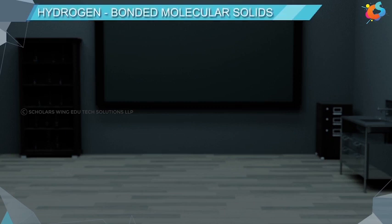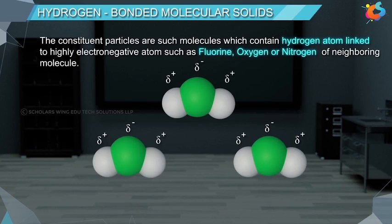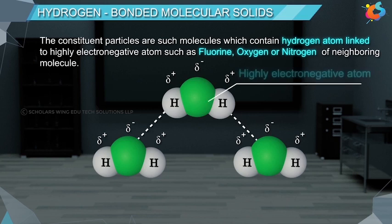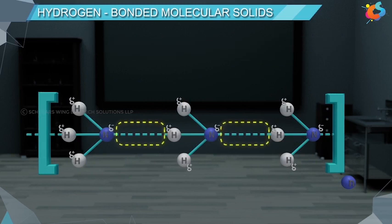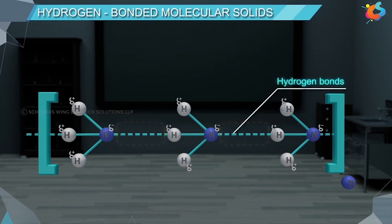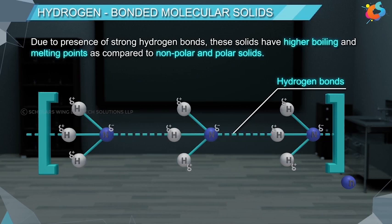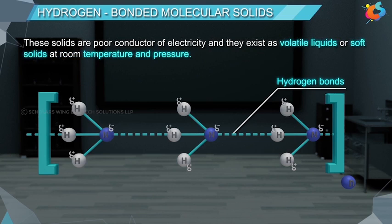In hydrogen bonded molecular solids, the constituent particles are molecules containing a hydrogen atom linked to a highly electronegative atom. The link between the hydrogen atom and the highly electronegative atom of a neighboring molecule is known as a hydrogen bond, represented by dotted lines. Due to strong hydrogen bonds, these solids have higher melting and boiling points compared to nonpolar and polar solids. They are poor conductors of electricity and exist as volatile liquids or soft solids at room temperature and pressure.